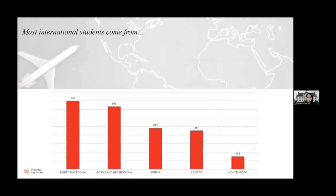Around three quarters of all international students come from the western Balkan region, mainly from North Macedonia, Bosnia and Herzegovina, Serbia, Croatia and Montenegro. One of the University of Ljubljana's strategic orientations is definitely cooperation with the western Balkans region and through research, teaching and study activities we also strive to connect with Slovenians living abroad.